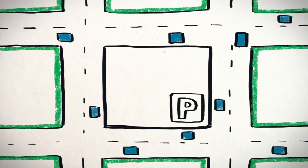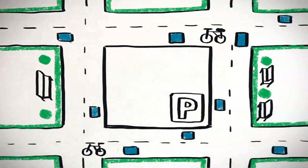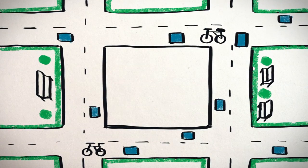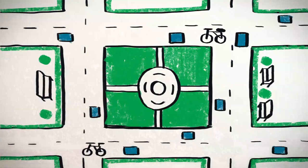We can widen sidewalks, plant trees, put in bike lanes and benches. We can get rid of parking lots and build affordable housing, or public parks, or whatever.